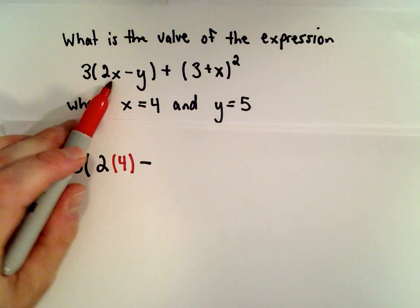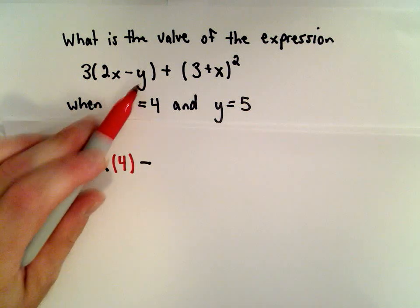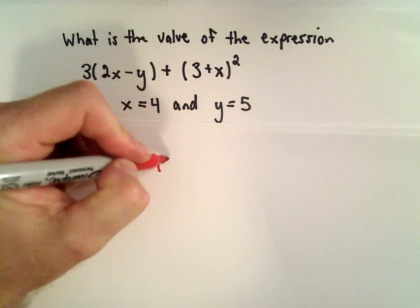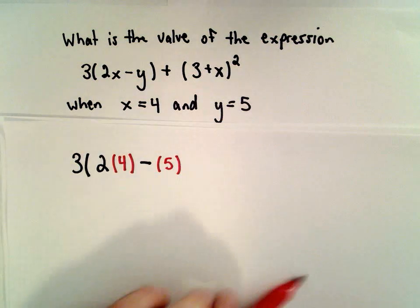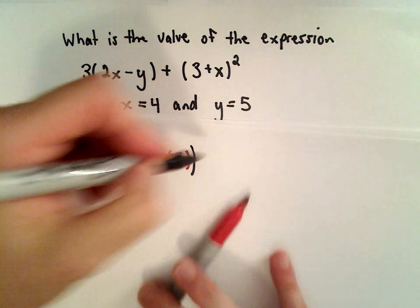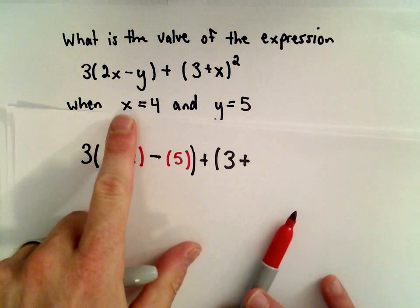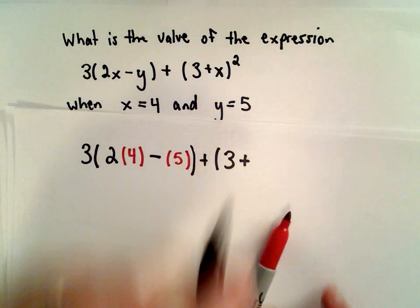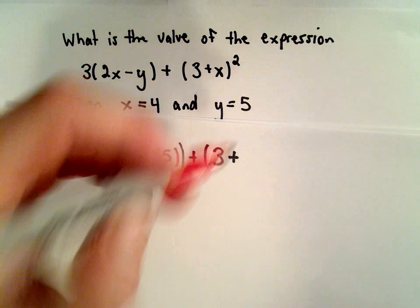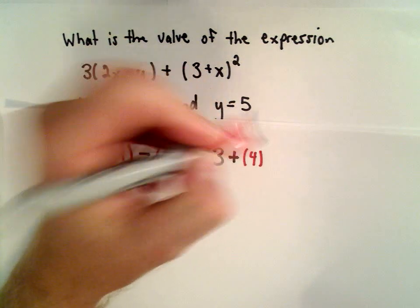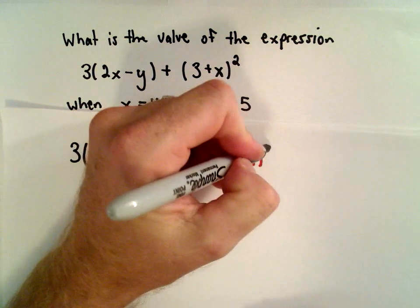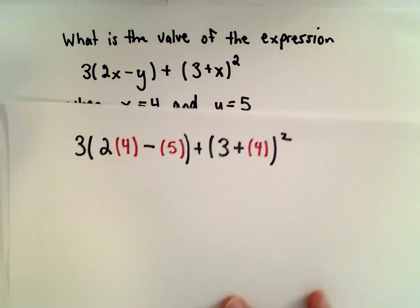So I've got 2 times x which is 4, minus y, and we said y is going to have a value of 5, plus 3 plus the quantity x equals 4, so let's substitute in x equals 4, and that's all being squared.